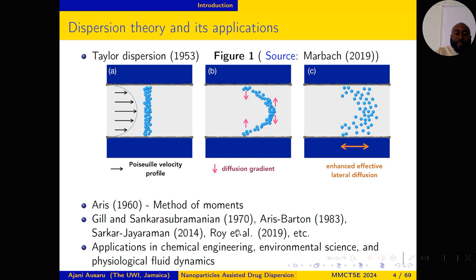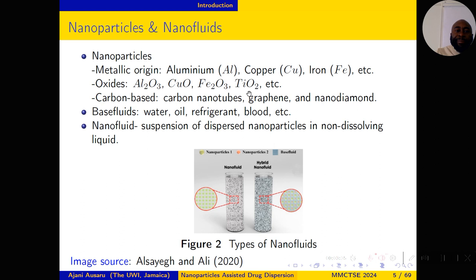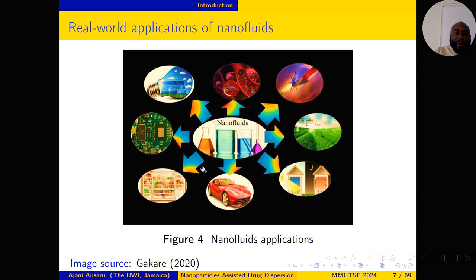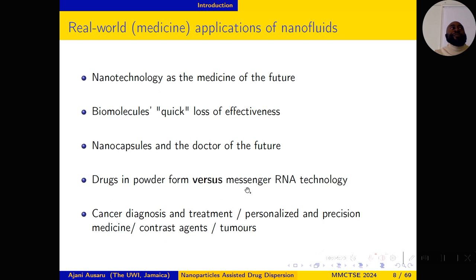There are many types of nanoparticles — many are of metallic origin and some are carbon-based. Nanoparticles are very fine particles suspended in a base fluid such as water, oil, refrigerant, or ethanol. It is a suspension of dispersed particles in a non-dissolving liquid, on the scale of one to 100 nanometers. These applications are widespread in many areas including microchips, refrigeration, automobiles, agriculture, and fertilizers. In cancer treatment, nanoparticles are seen as the medicine of the future.